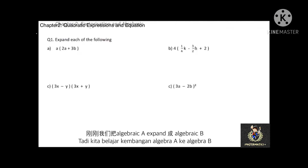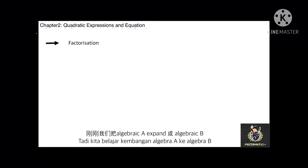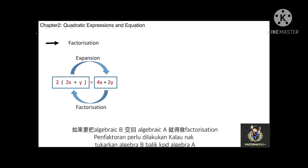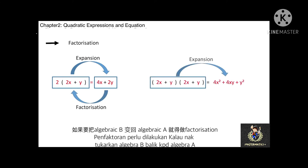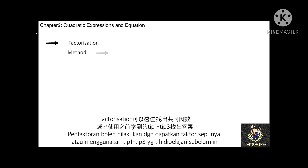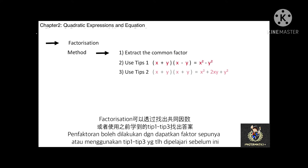In the previous topic, we expanded algebra A into algebra B. If we want to reverse algebra B back into algebra A, we have to perform factorization. We can perform factorization by extracting the common factor, or by using Tips 1 to Tips 3 that we learned in the previous topic.